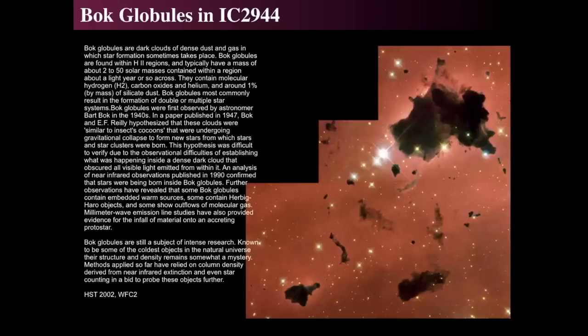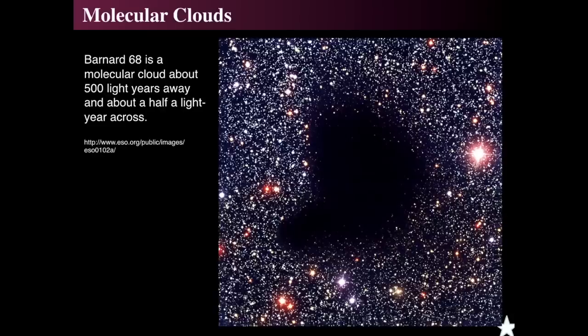Bok globules, named after Bart Bok, are places mostly made of molecular hydrogen, carbon monoxide, helium, and silicate dust particles — the cigarette-smoke-type material. They are about a fraction of a light year across and can be up to 2 to 50 solar masses, dense enough that their cores could form stars if they collapse further. Barnard 68, about 500 light years away, is an isolated molecular cloud that absorbs light from background stars, with interstellar reddening visible on its periphery. Its interior has about a million particles per cubic centimeter — an incredible vacuum by Earth standards — and is in the process of collapsing.